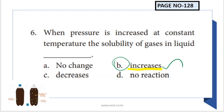Next question: when pressure is increased at constant temperature, the solubility of gases in liquid increases. For example, in a soda bottle, carbon dioxide gas is dissolved in water under high pressure. When pressure is increased, the solubility of gases in liquid also increases.